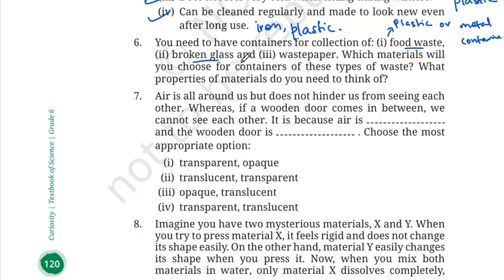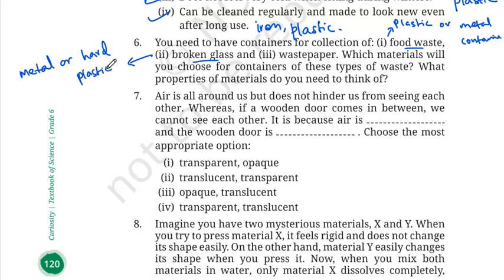For broken glass, we need something hard that cannot be easily torn and that the glass particles will not tear through. So we can use metal or any hard thick plastic. For waste paper, it is lightweight, so you can use any lightweight plastic or cardboard containers.